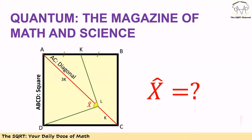Hello everyone. In this video we are going to talk about a problem from Quantum, the magazine of math and science. In this problem we have a square ABCD, and K is the midpoint of AB. We have a diagonal AC, and L is on AC such that AL is 3 times LC. We want to find angle X.